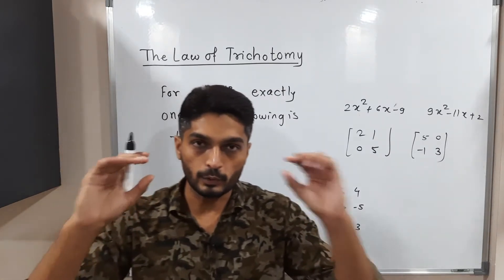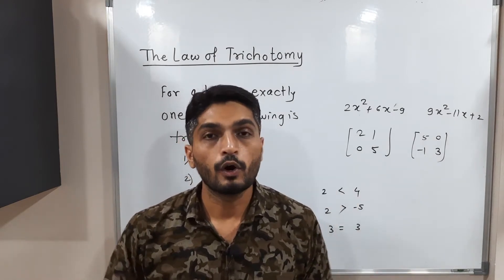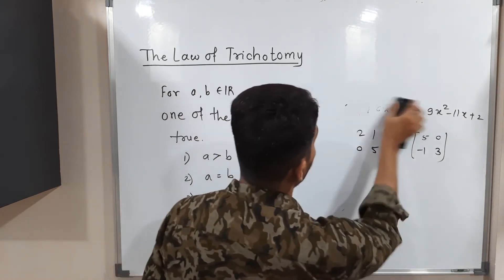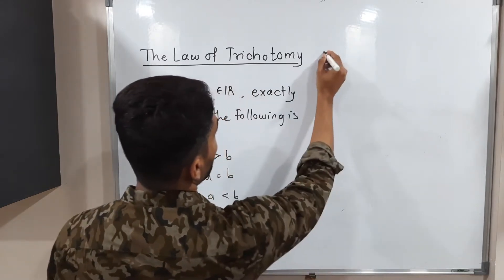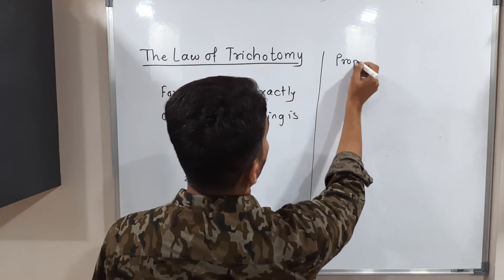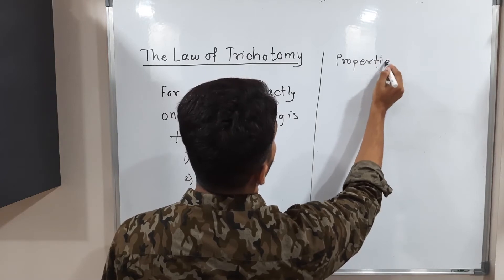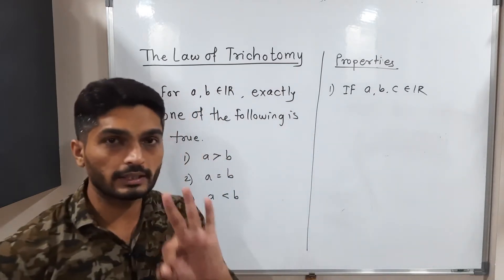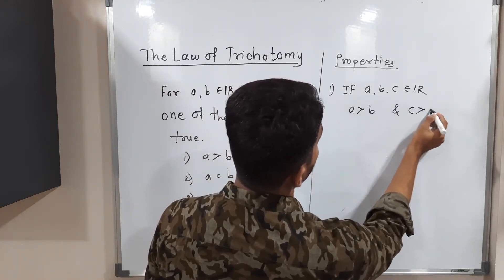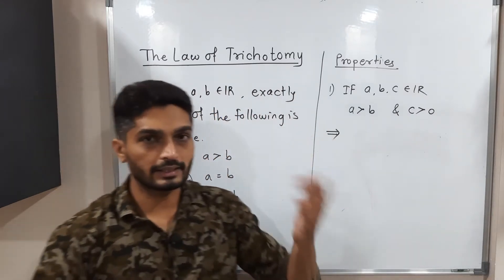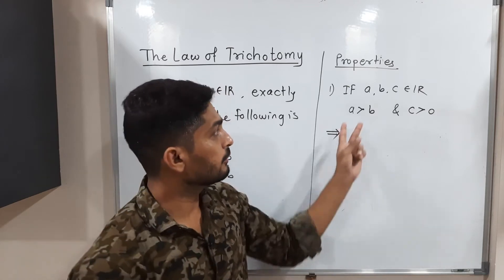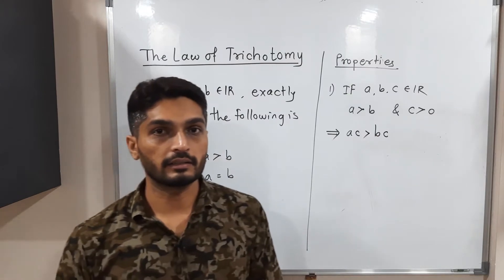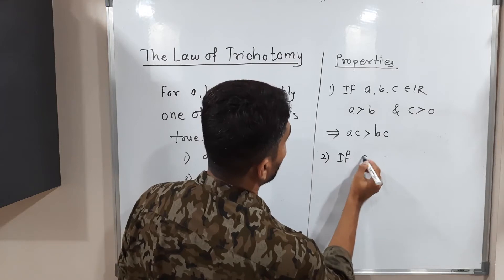So the Law of Trichotomy says: if you have two real numbers, either the first is greater than the second, equal to the second, or less than the second. Now a second property: if a, b, c belong to ℝ, and a > b with c > 0 (c is a positive real number), then if you multiply both sides by c, the same relation is maintained — that is, ac > bc.